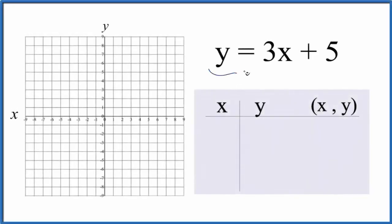Let's graph the linear equation y = 3x + 5. We're gonna do this two ways. First we'll use a table of values, then we'll check our work with the slope-intercept formula.